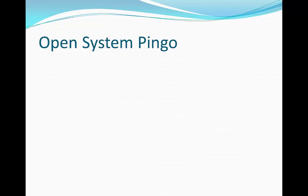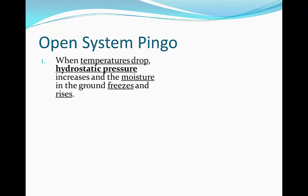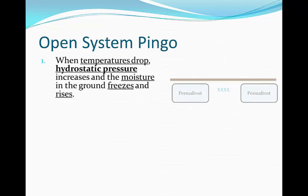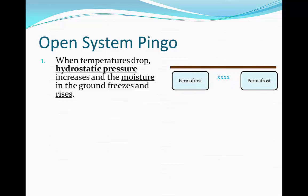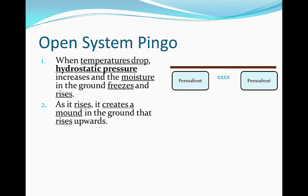We'll first look at open system pingoes. These are pingoes which form in areas of discontinuous permafrost. When temperatures drop, hydrostatic pressure is going to increase and moisture in the ground is going to freeze and rise. We get the moisture clumping together and this is going to form an ice lens. As it rises it creates a mound in the ground that rises upwards.